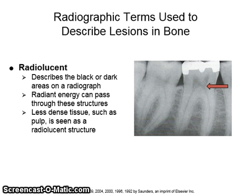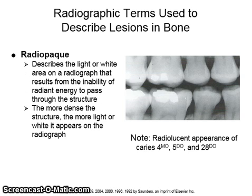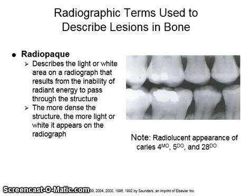A radiolucent lesion is one that is black or dark on a radiograph. Radiant energy can pass through these structures because they are less dense, such as the pulp tissue indicated by the red arrow in the radiograph on the right. Radiopaque describes the light or white area on a radiograph that results from the inability of radiant energy to pass through the structure. The more dense the structure, the more light or white it appears on the radiograph. Notice the radiolucent lesions and the radiopaque amalgam restorations on the teeth on the radiograph on the right.